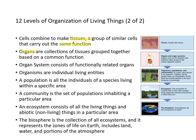Organs are collections of tissues grouped together based on common functions. Organ systems consist of functionally related organs. An organism is the individual living entity. A population is all the individuals of a species living in a given geographical area. A community is a set of populations inhabiting a particular area. An ecosystem consists of all living and abiotic (non-living) things in a given area. The biosphere — Earth itself — is the collection of all ecosystems and represents all zones of life including land, water, and atmosphere.